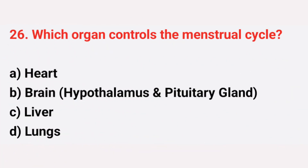Question number 26: Which organ controls the menstrual cycle? The right answer is option B, the brain.